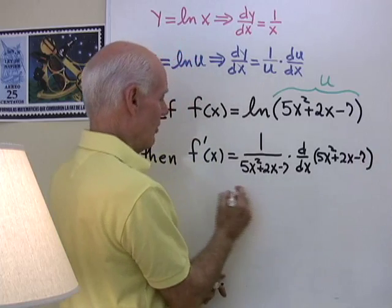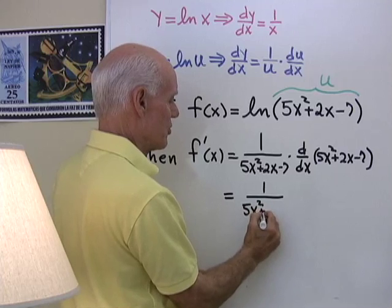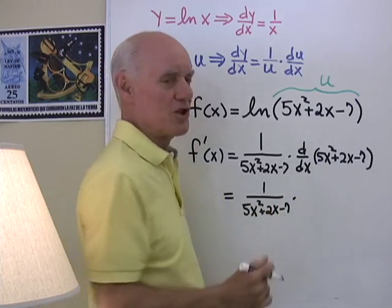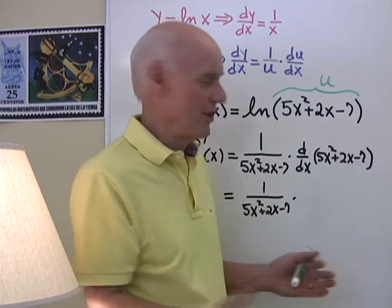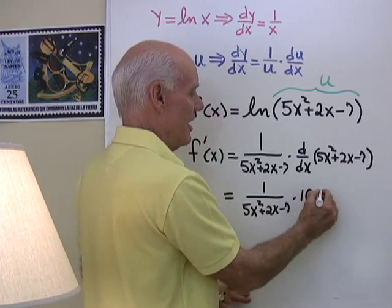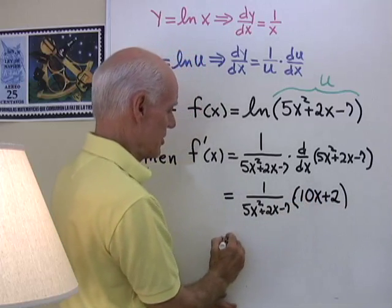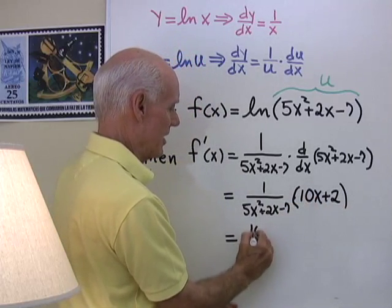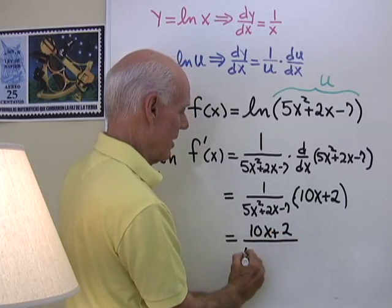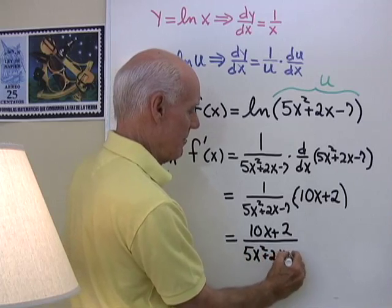So that's going to be 1 over 5x squared plus 2x minus 7 times, I differentiate this by just differentiating like I would because it's a polynomial. So it's going to be 10x plus 2 minus 0. And then I can simplify that a little bit by writing it as 10x plus 2 all divided by 5x squared plus 2x minus 7.